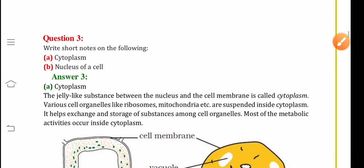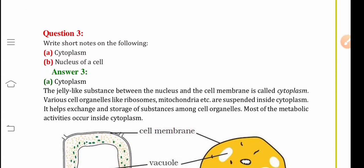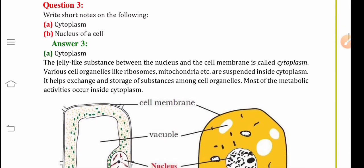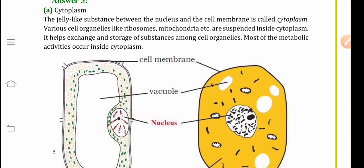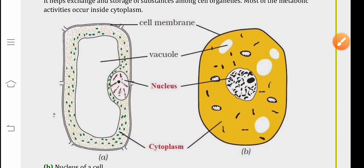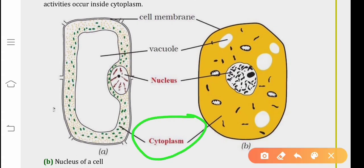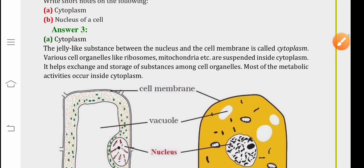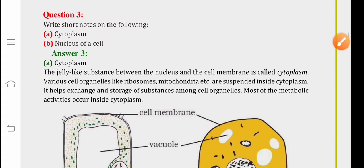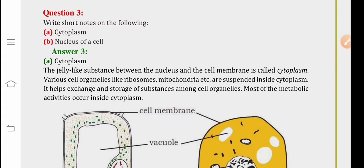Moving on to question number three. Write short notes on the following. One is cytoplasm and another is the nucleus of the cell. We have already seen these organelles in the diagram. This is the nucleus and here is the cytoplasm.